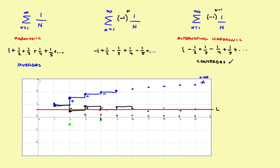So the first interesting thing about alternating series is that you can have a series that diverges when considered as a positive series, but if you change it into an alternating series, it converges. That won't be true in every case, but it happens to be true for the harmonic series.